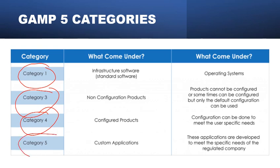Category 5 is called custom software, also called bespoke software. This software is custom designed and coded to suit business processes — for example, any software internally or externally developed to fulfill business requirements. Regarding category 2: many people wonder why it is not mentioned in GAMP5 categories. Initially category 2 was there, but it was removed in GAMP version 4. Category 2 was considered for firmware providing low-level control of simple instruments. As technology advanced, it was recognized that firmware can be embedded within the system, and hence category 2 was removed.